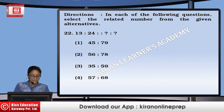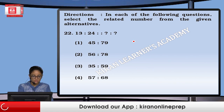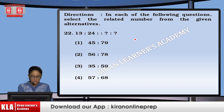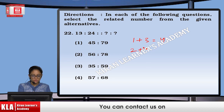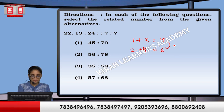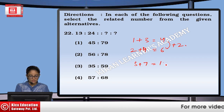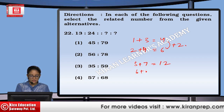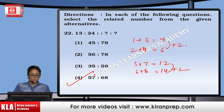Next, 13 is to 24. If I go with this: 1 plus 3 is 4, and 2 plus 4 is 6 — the difference is plus 2. Similarly, looking at the options: 5 plus 7 is 12, and 6 plus 8 is 14 — this also follows plus 2. So we are going to mark option number 4.